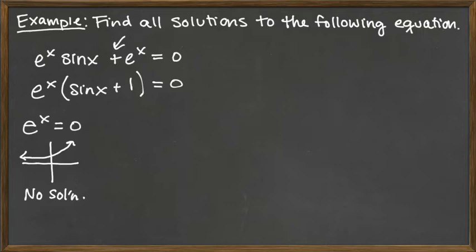Now we have sine of x plus 1 is equal to 0, and when we're trying to solve that, we realize that the only x is in the argument of sine. And so when we're trying to isolate the x there, we have to isolate the term that has x in it. We'd have sine of x is equal to negative 1 when we subtract 1 from both sides.